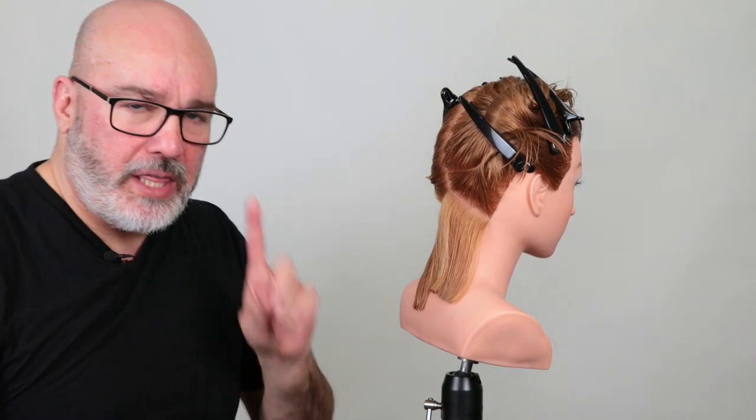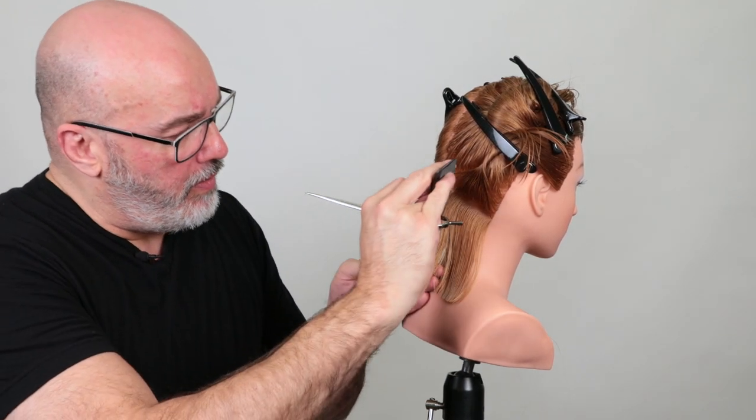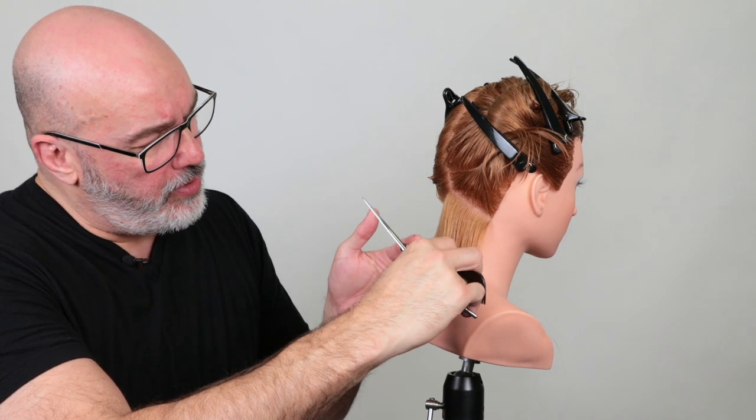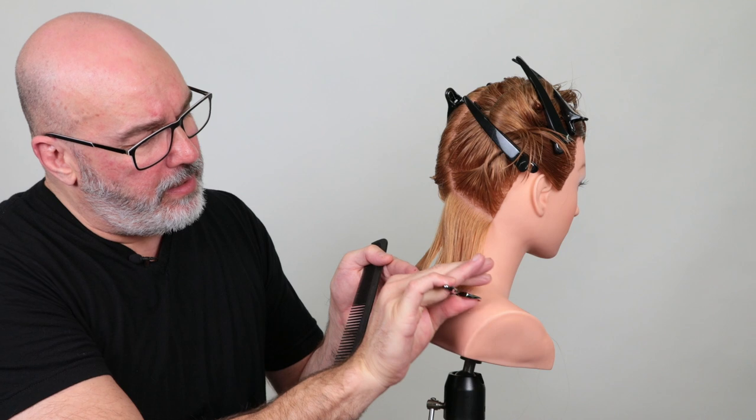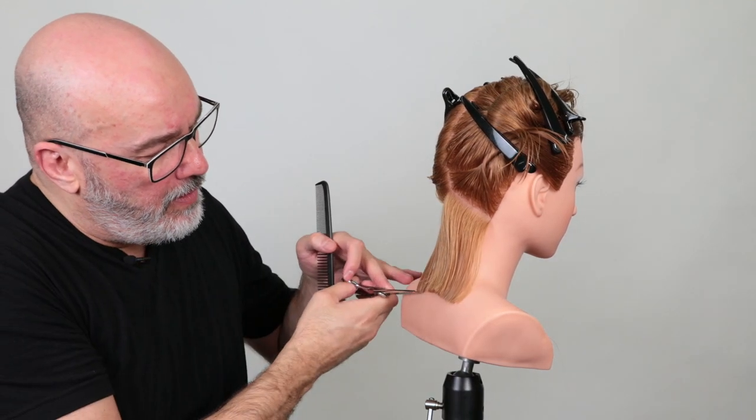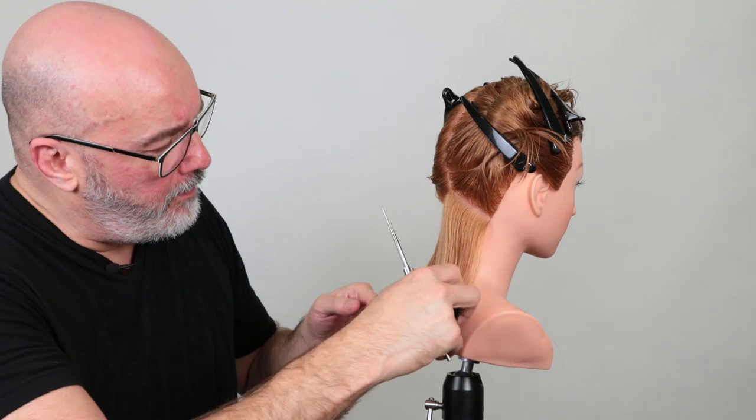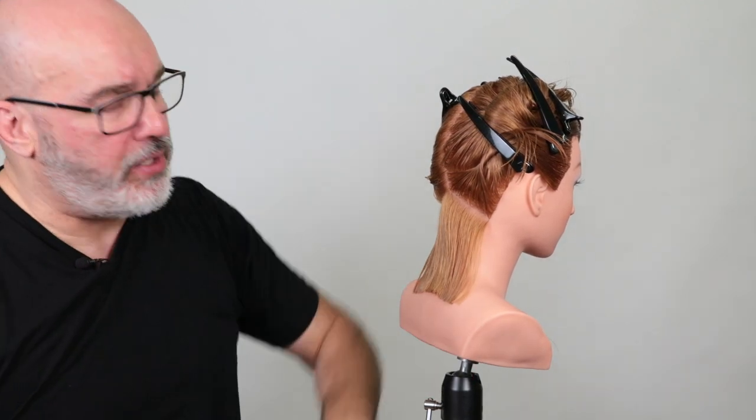So key things to focus on. Combing clean, flip the comb to create the tension, plant the fingers, cut on the backstroke. Clean that up as best you can on the doll head. Make sure it's even.